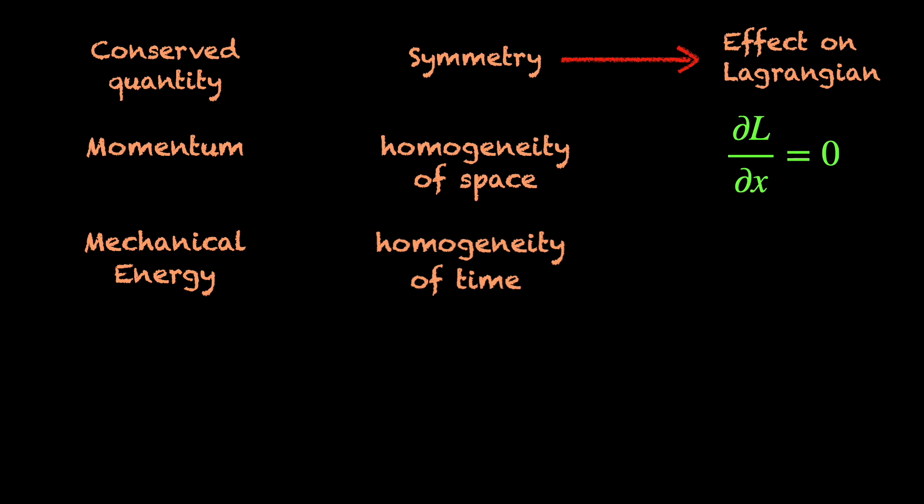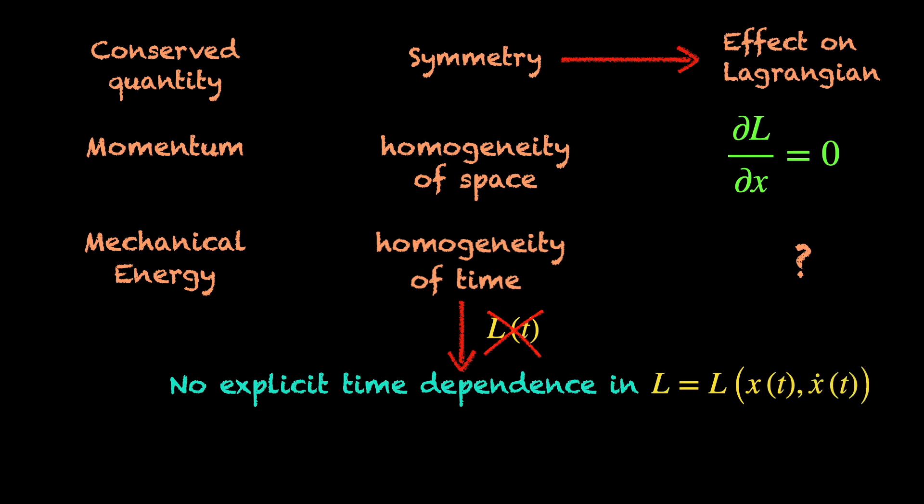To see this, let's address how the homogeneity of time affects the Lagrangian of this system. It should not have any explicit time dependence. The implicit time dependence must be there through the position and velocity because we know that Lagrangian depends on position and velocity variables and they are of course functions of time. So, while the partial derivative of the Lagrangian del L del t is 0, the total time derivative dL dt is not.